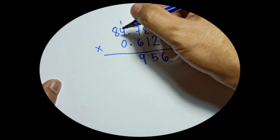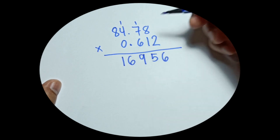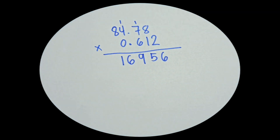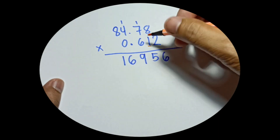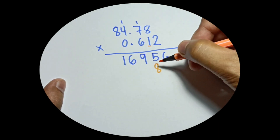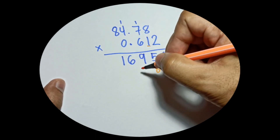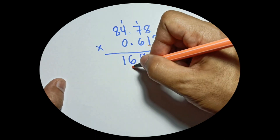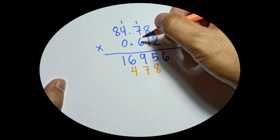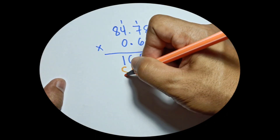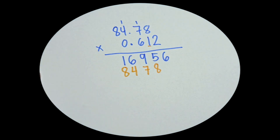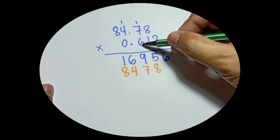Now for the second digit, which is 1: 1 times 8 is 8, write the answer on the second line. 1 times 7 is 7, 1 times 4 is 4, and 1 times 8 is 8. Now let's move on to the third digit, which is 6.